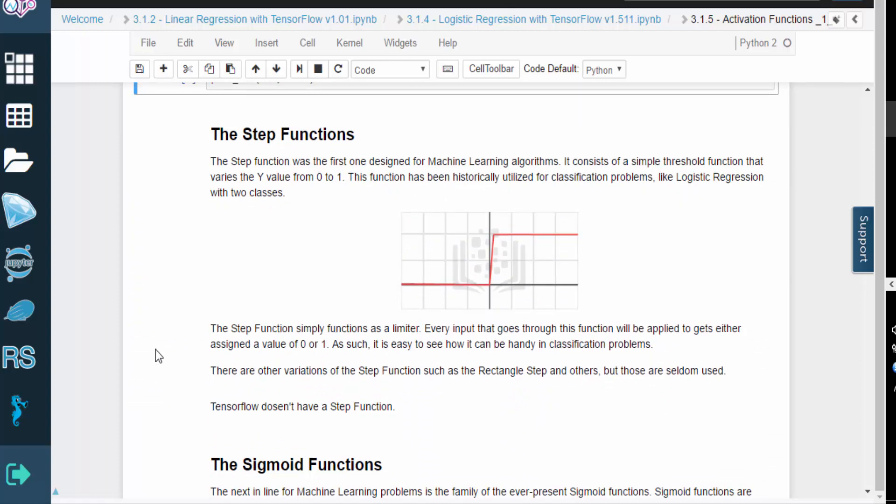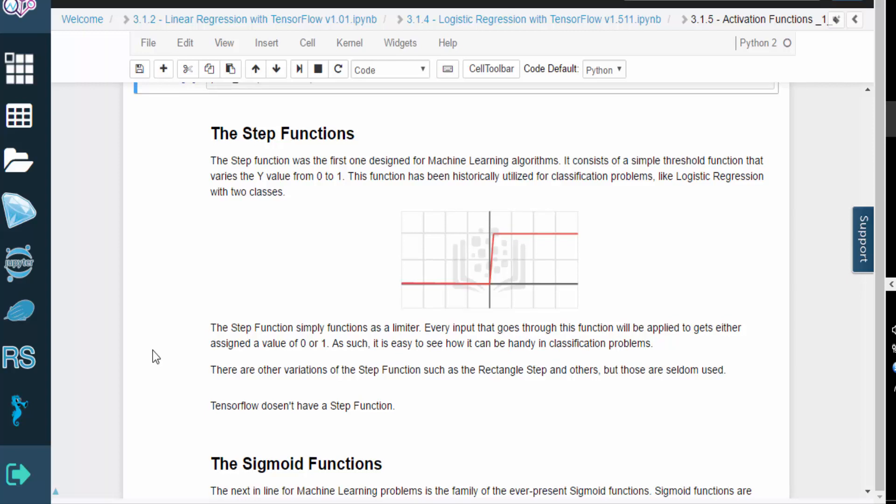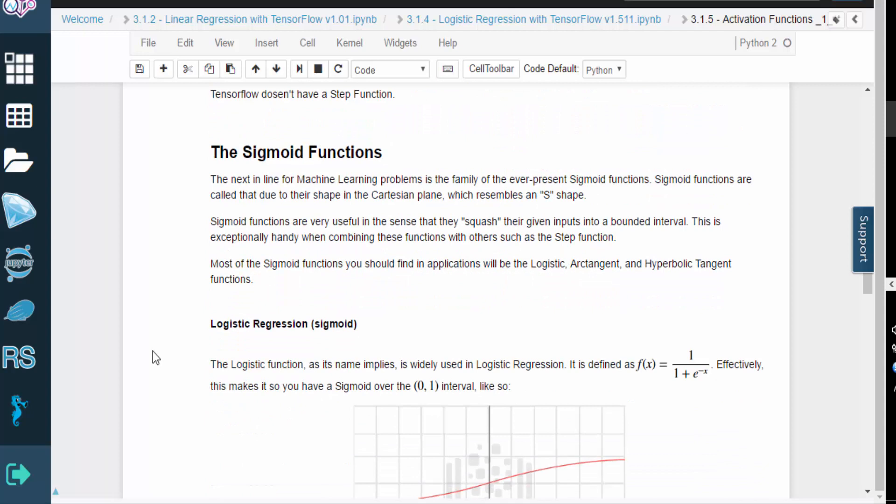The step function was one of the first activation functions designed for machine learning. This function essentially acts as a limiter. If the input exceeds a certain value, the output will be 1, otherwise the output will be 0. It should be easy to see that this type of output lends itself well to classification problems, like two-class logistic regression. There are variations like the rectangle step function and a few others, but they aren't commonly used, and as it turns out, TensorFlow does not offer a step function.